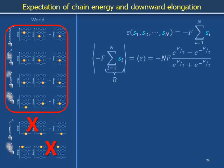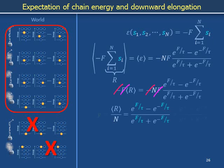Holding the force capital F constant as the world explores its accessible configurations allows us to pull the F out of the averaging brackets. The negative signs and F's on both sides cancel, so the average of the downward displacement of the weight — bracket r — normalized by the maximum length of the chain capital N, equals a quotient: e to the F over tau minus e to the minus F over tau, all over e to the F over tau plus e to the minus F over tau.